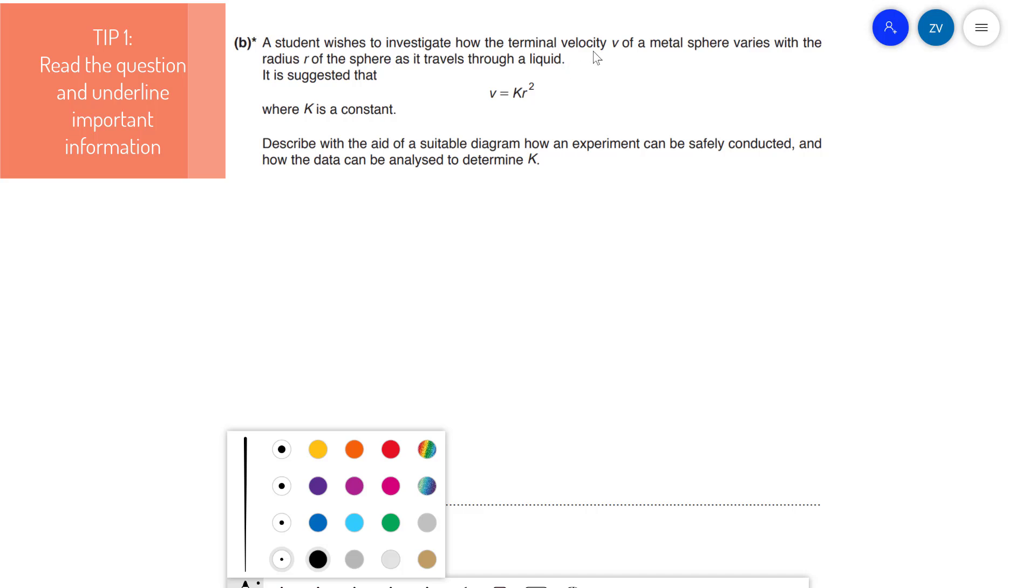A student wishes to investigate how the terminal velocity V of a metal sphere varies with the radius R of the sphere as it travels through a liquid. That instantly is telling me we're measuring terminal velocity, probably with a light gate, and the radius R, probably with a micrometer.